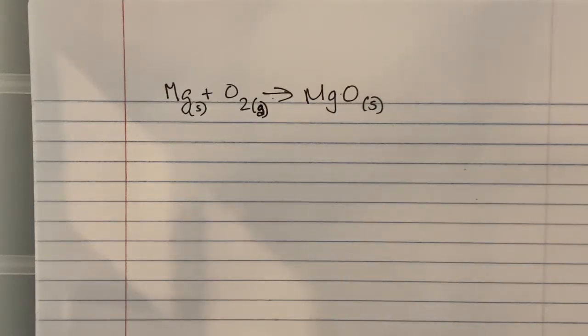We're working on balancing today. What I have is magnesium in its solid form plus oxygen in its gas form, and that's going to yield or make magnesium oxide, and that's a solid. So this is our equation sentence, which is our equation reaction.